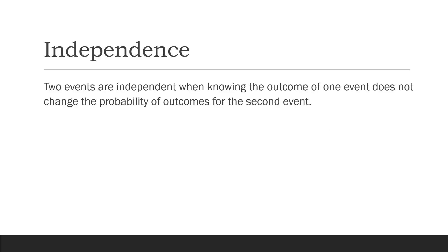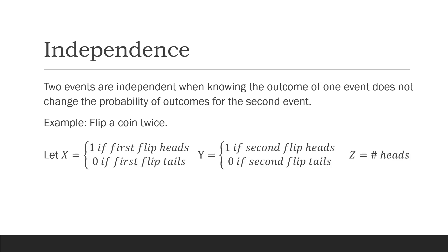Let's talk about the idea of independence between two random variables. Two events or random variables are independent when knowing the outcome of one does not change the probability of the outcomes for the second. For example, if I flip a coin twice and let x be 1 if the first flip lands heads and 0 if tails, and y be 1 if the second flip lands heads and 0 if tails, then x and y are independent because there's no reason to believe that the first flip influences the second flip.